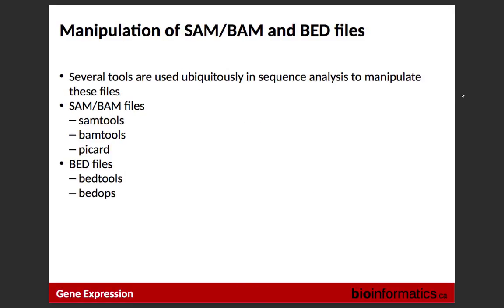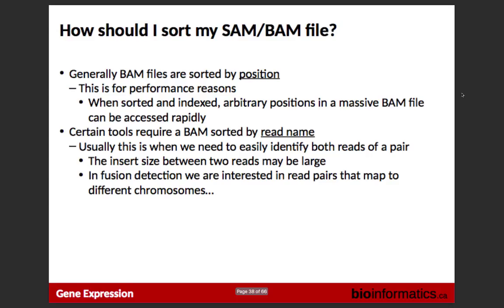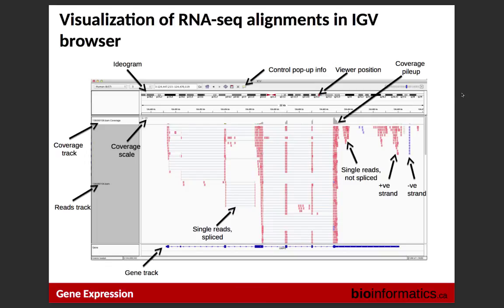SAM and BAM files can be sorted in two ways: by position, which makes it faster to pull reads at certain coordinates; or by read ID/name, which is useful if you're trying to assess fusions and need to maintain pair order. IGV can load RNA-seq BAM files just like DNA-seq BAM files.